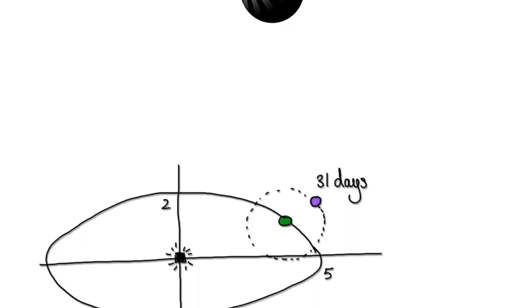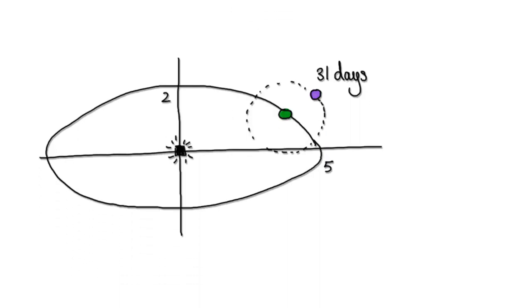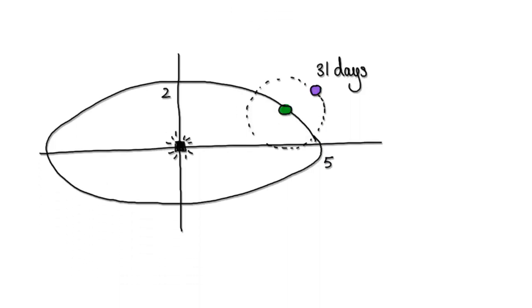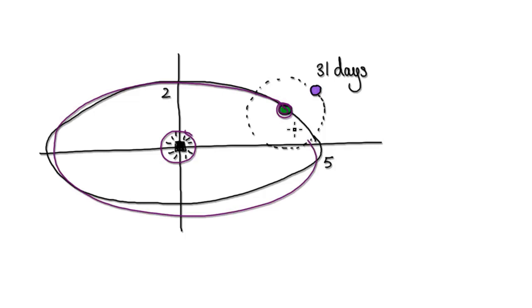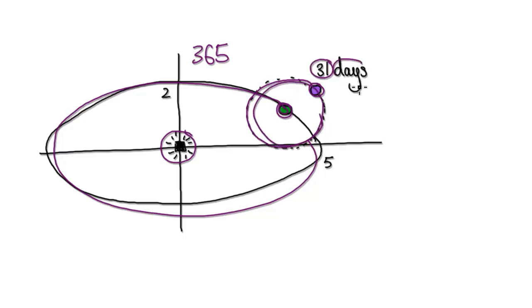In this video, we're going to use parametric equations to simulate the solar system. You've got the Sun in the middle, the Earth orbiting the Sun every 365 days, and then the Moon orbiting the Earth every 31 days.